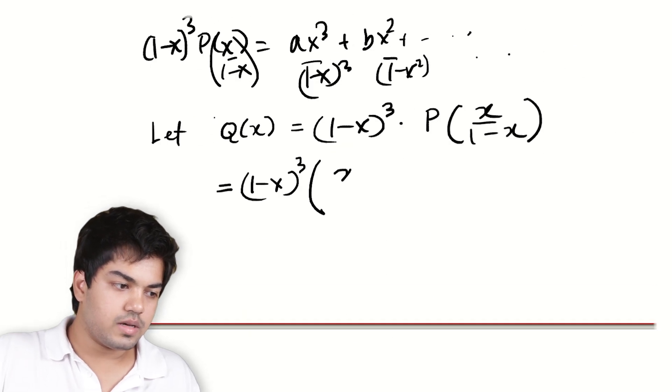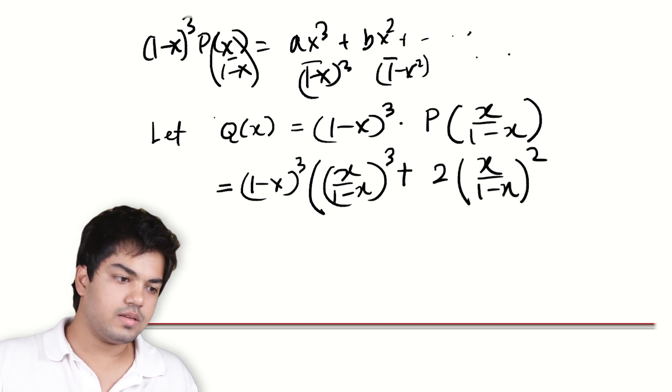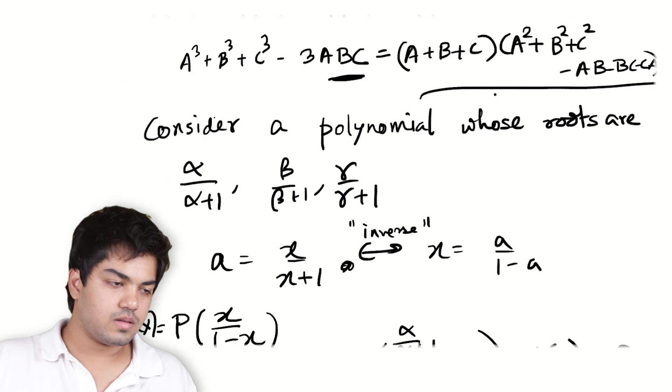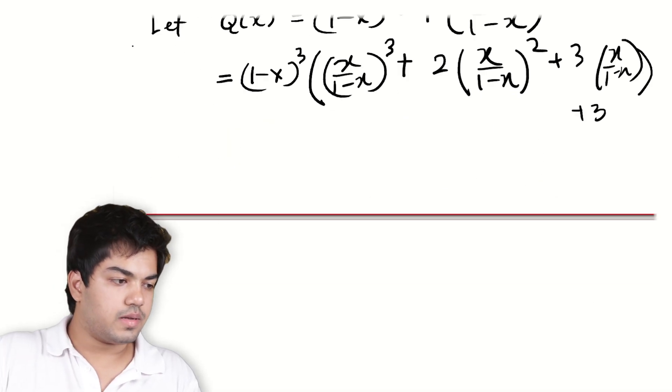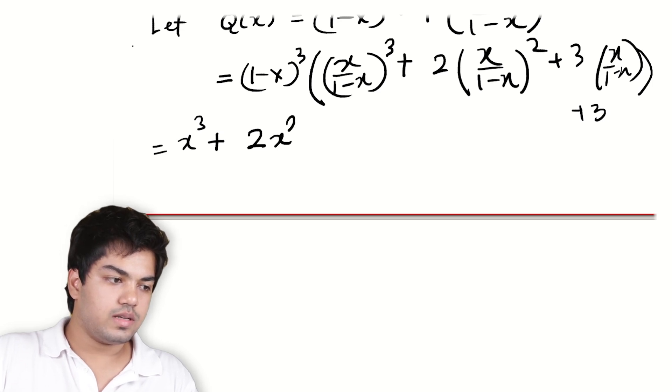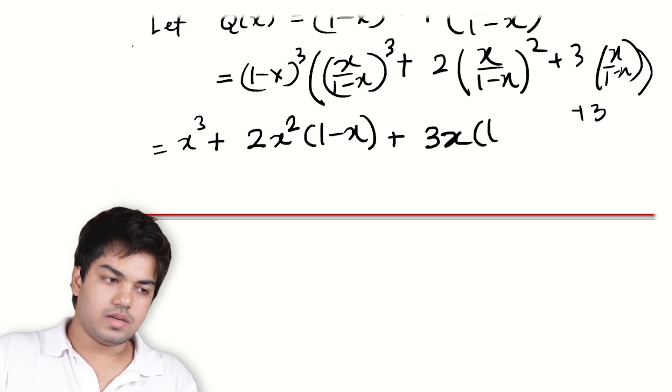So we'll get (x/(1-x))³ + 2(x/(1-x))² plus 3(x/(1-x)) + 3. So when I multiply it out, I get x³ again plus 2x²(1-x).